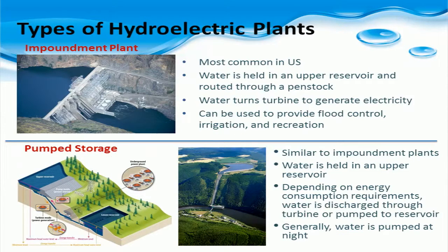The most common type of hydroelectric plant in the United States is the impoundment plant. In this type of plant, water is held in an upper reservoir contained behind a dam structure. Water from the upper reservoir is routed through a penstock to a turbine to generate electricity. Impoundment plants are generally larger than other types, and due to the large amount of water available in the reservoir, the flow rate through the dam can be more easily adjusted to meet electricity demands. Water levels may also be adjusted to provide flood control, irrigation water, and recreational areas.